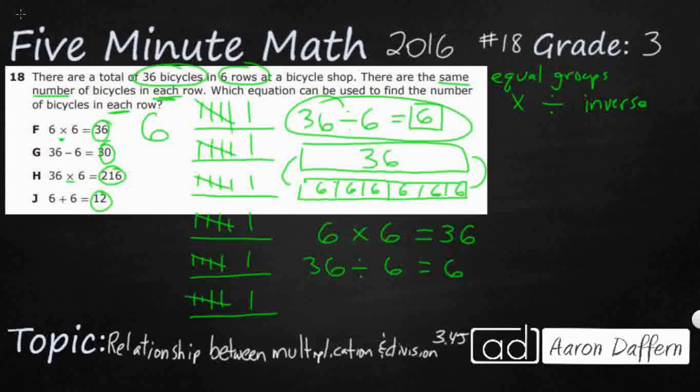But since we've got two 6s, just flipping those around isn't going to make it look any different. So really we just have 2. But this is what the inverse operation means. It means that whenever you have a division problem or division number sentence like we do up here, there's always going to be a matching multiplication problem.